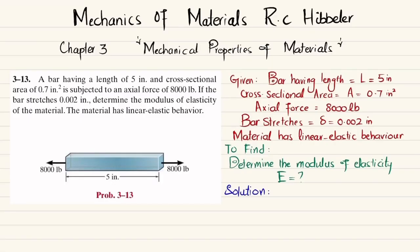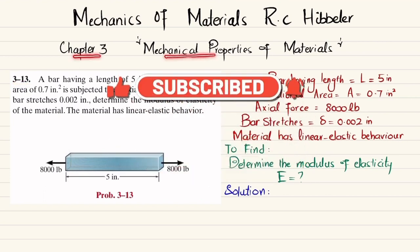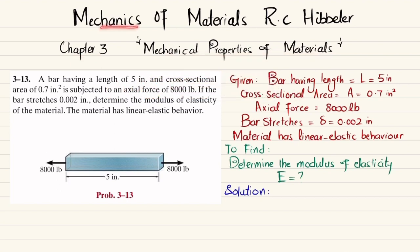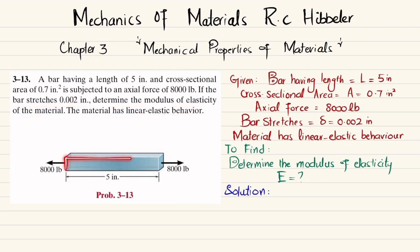Welcome back. In this video we solve problem 3-13 from chapter 3, Mechanical Properties of Material, in Mechanics of Material by R.C. Hibbeler. A bar having a length of 5 inch and cross-sectional area of 0.7 square inch is subjected to an axial force of 8000 pounds. If the bar stretches 0.002 inch, determine the modulus of elasticity. The material has linear elastic behavior.